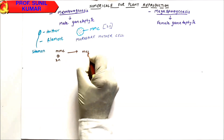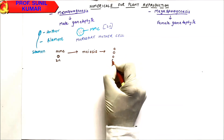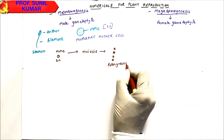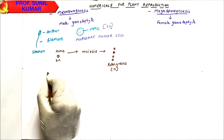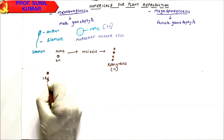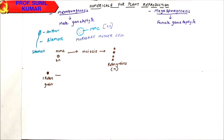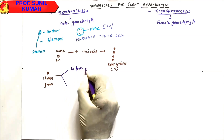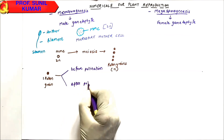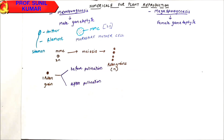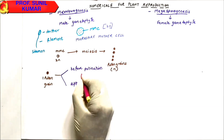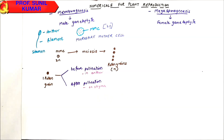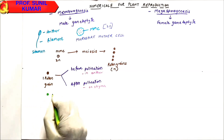The MMC, which is 2N, undergoes meiosis and forms four haploid pollen grains. Each pollen grain will then undergo mitosis two times — once before pollination (in the anther) and once after pollination on the stigma.